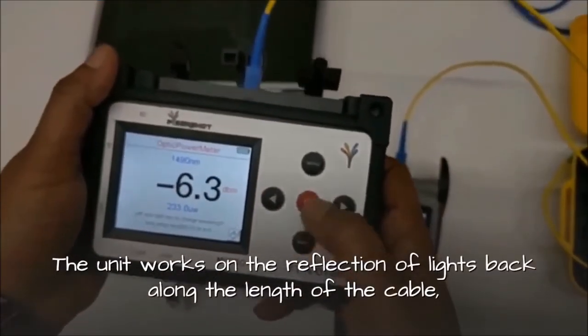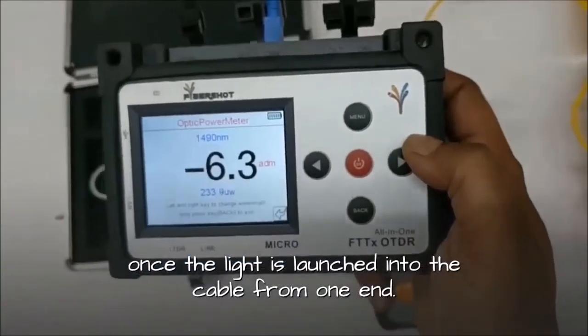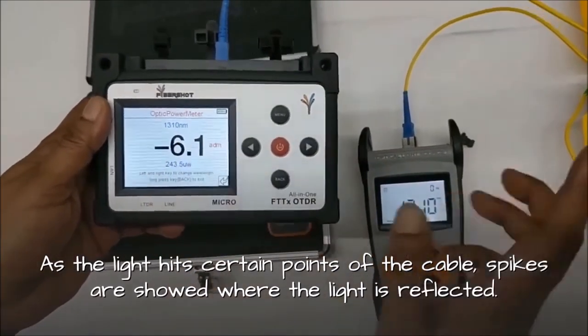The unit works on the reflection of light back along the length of the cable once the light is launched into the cable from one end. As the light hits certain points of the cable, spikes are shown where the light is reflected.